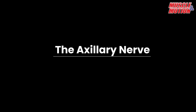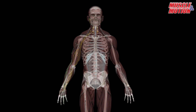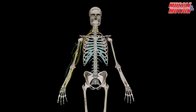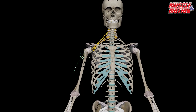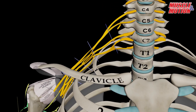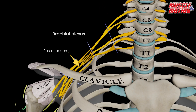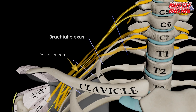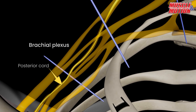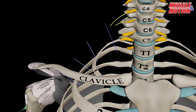Axillary nerve. The axillary nerve originates from the posterior cord of the brachial plexus, with root contributions from C5 and C6.